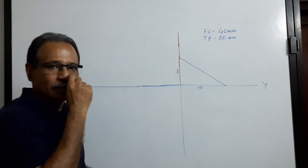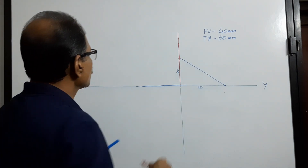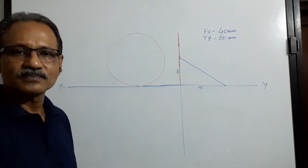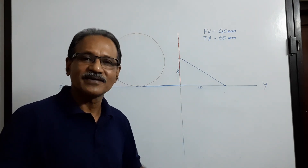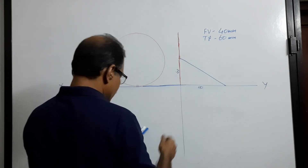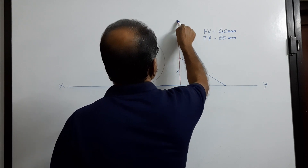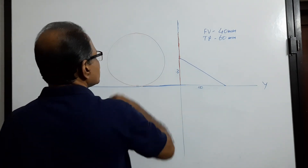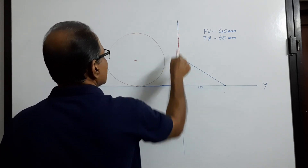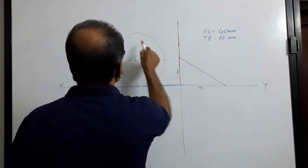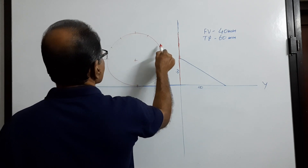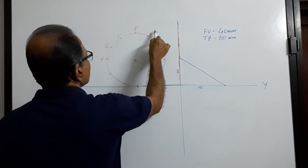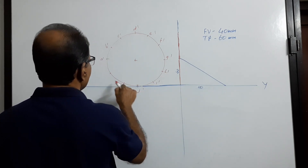The lamina is now touching VP. What is the elevation? The elevation is a circle. Draw the elevation of the lamina. Take the center and draw the circle with this diameter. Divide the circle into 12 equal parts and name them: A-dash, B-dash, C-dash, D-dash, E-dash, F-dash, G-dash, H-dash, I-dash, J-dash, K-dash, L-dash.